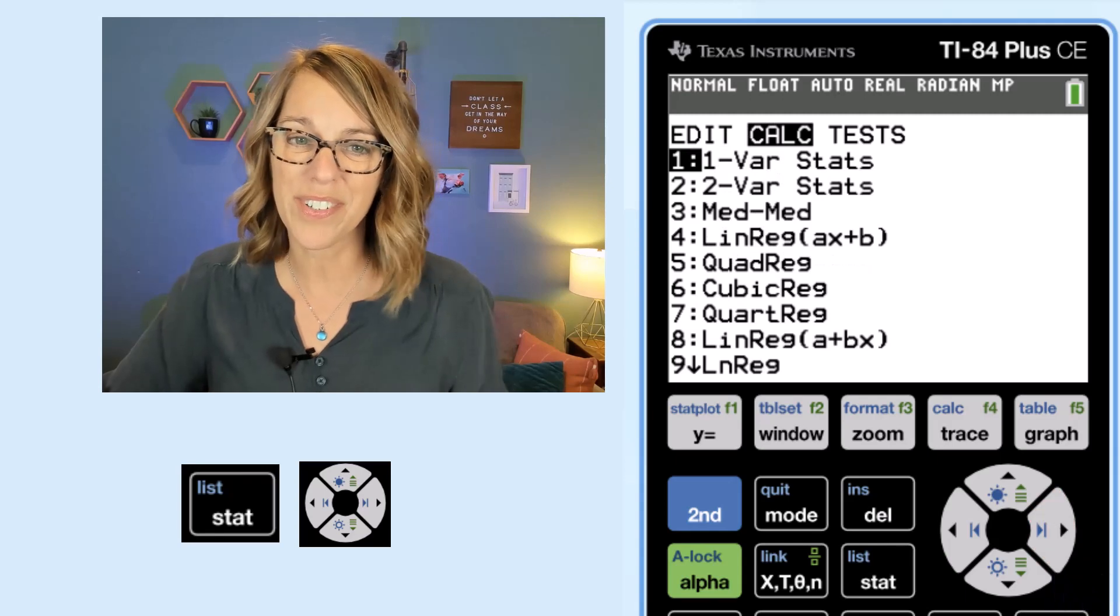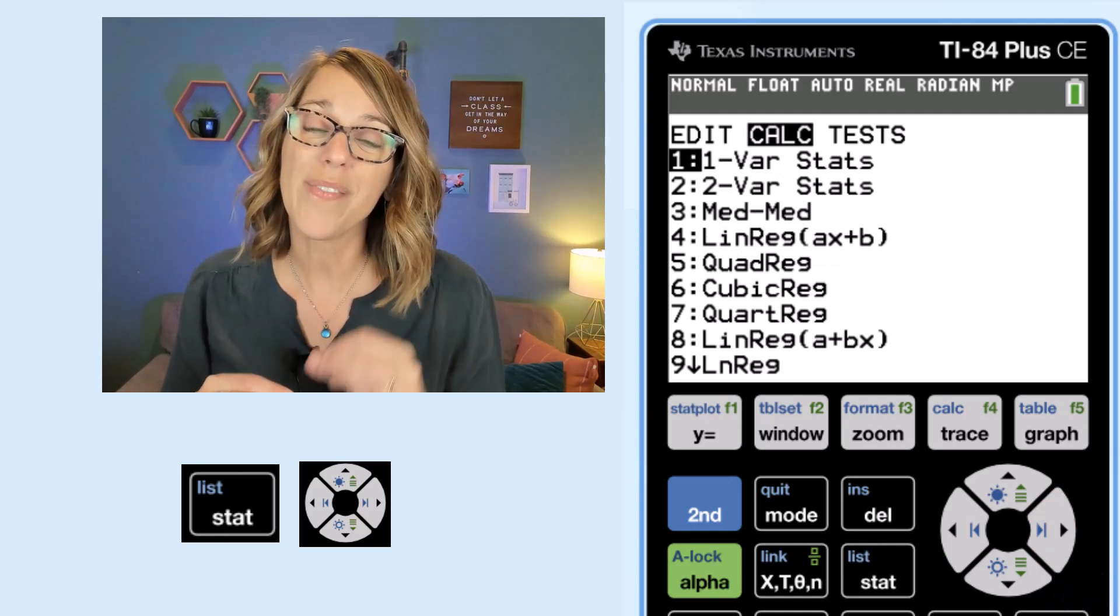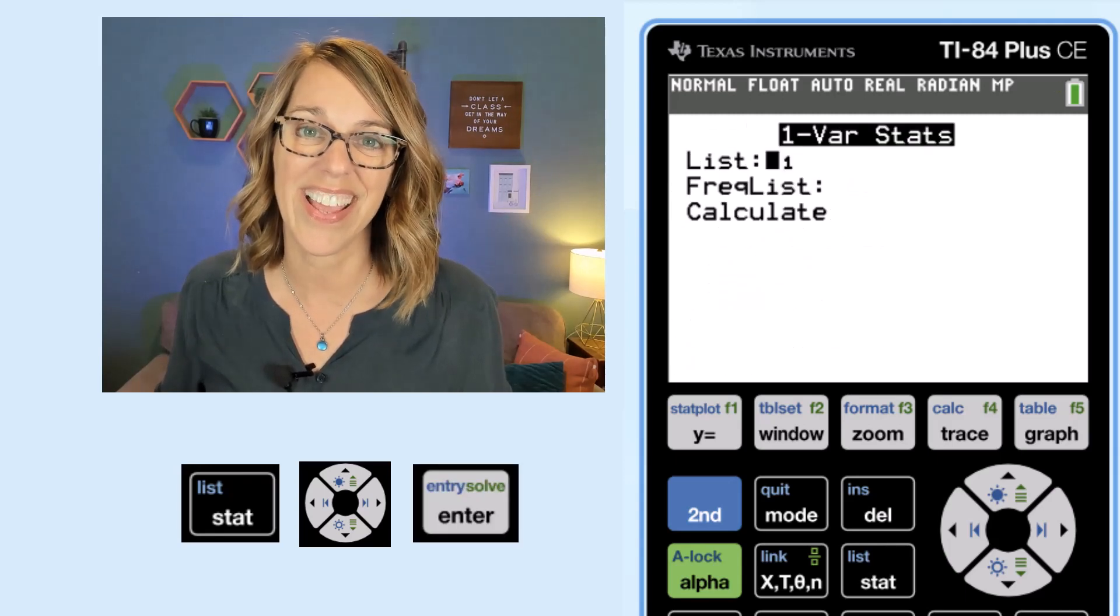So I'm going to arrow over, choose calculate, and then I do want one-variable statistics so I can go ahead and hit enter.